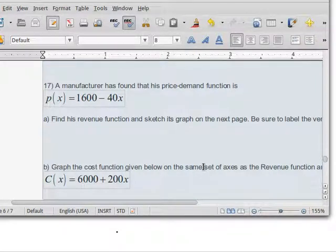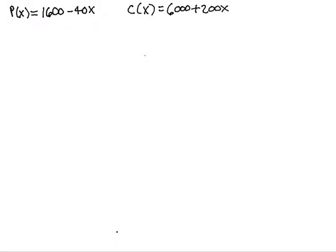A manufacturer has found that his price-demand function is p of x equals 1600 minus 40x. So what we're going to do is find his revenue function.